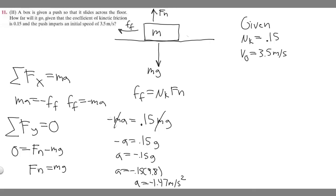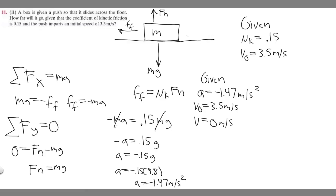Now we think about it as a kinematic equation — we're trying to find how far the box will go. Our knowns are: a equals minus 1.47 m/s², initial velocity V₀ equals 3.5 m/s. And since we're asking how far it goes until it stops, the final velocity V equals 0 m/s. We're solving for delta x using the equation V² equals V₀² plus 2a times delta x.